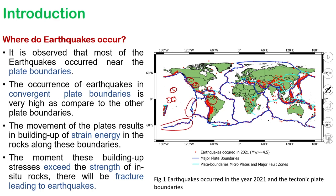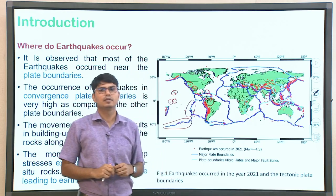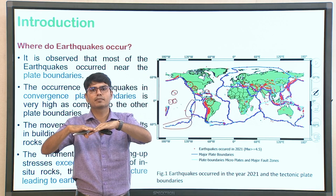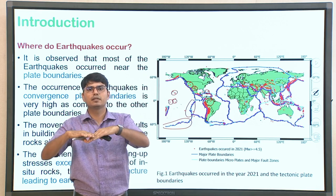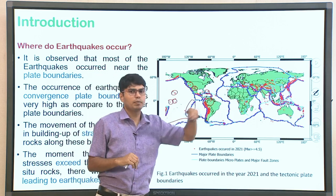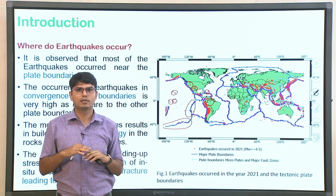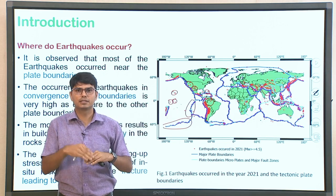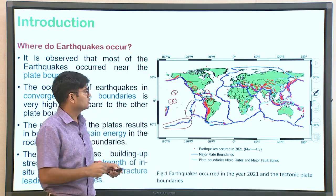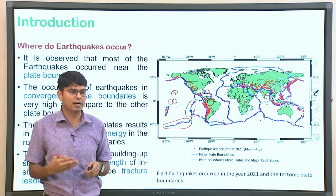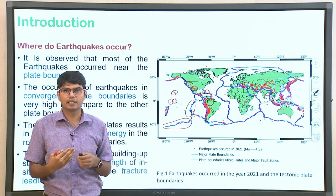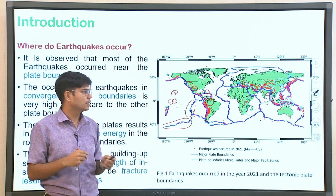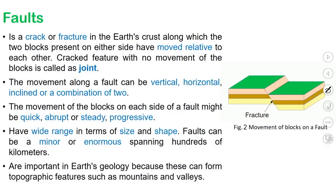The Himalayas are a notable example — the Indian plate is subducting under the Eurasian plate. What we see in general is the development and rise of the Himalayas. This process started somewhere around 50 million years ago and the Himalayas are still rising. This process of rising, development of ridges, valleys, mountains, volcanic eruptions, and long chains of ridges can be witnessed continuously all across the globe.